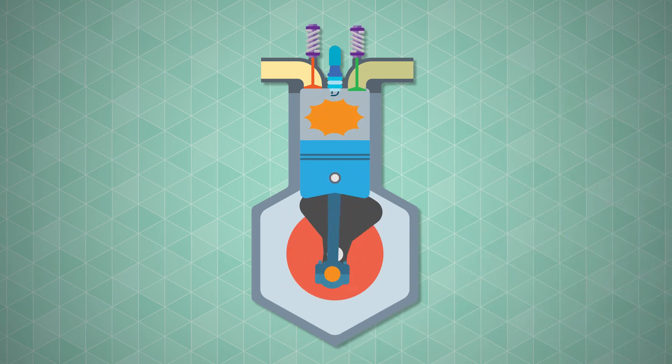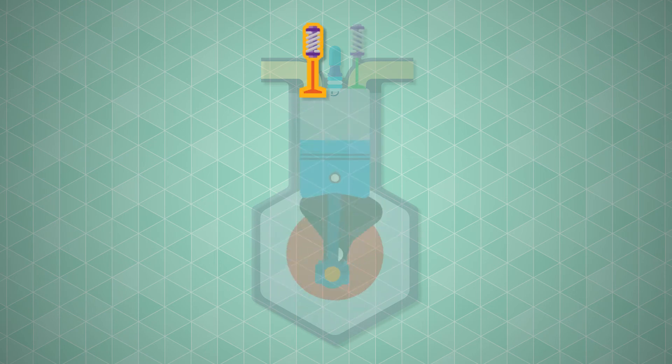The major components of the engine include the piston, intake valve, spark plug, exhaust valve, crankshaft, and connecting rod.